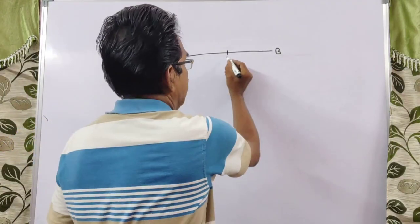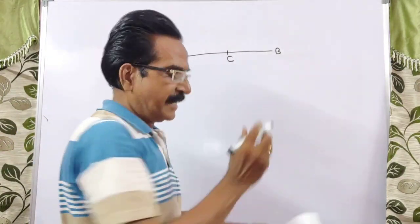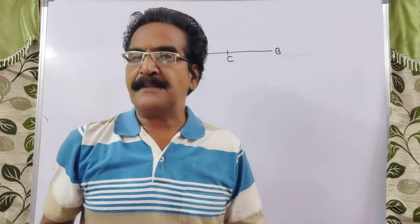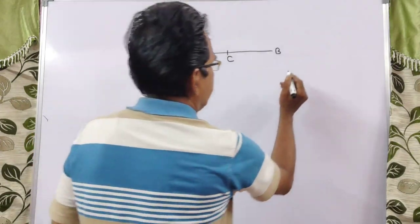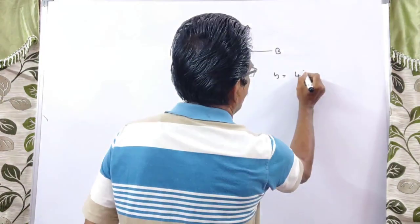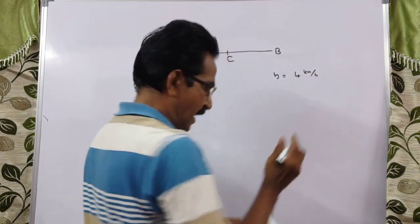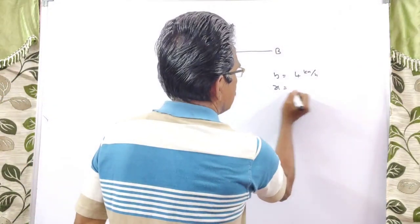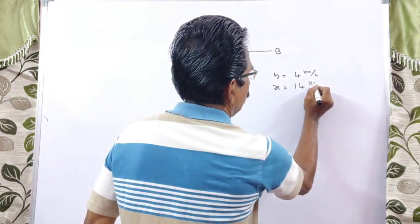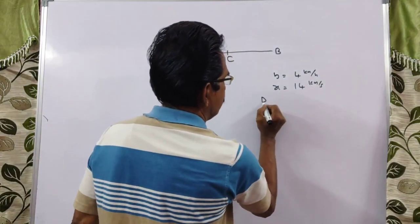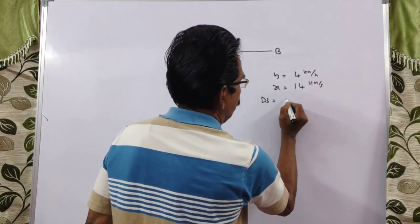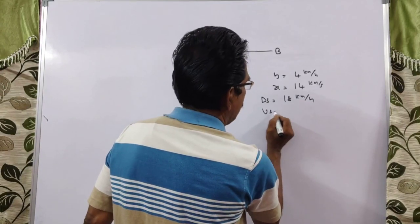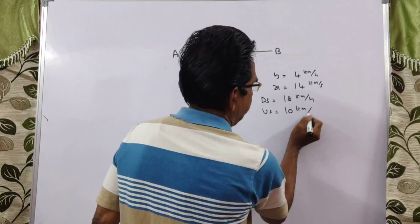Midway between A and B, this is point C, which is midway between A. If the velocity of the stream is 4k mph and the speed of the boat is 14k mph, then downstream velocity is 14 plus 4, that's x plus y, 18k mph, and upstream velocity is 14 minus 4, 10k mph.